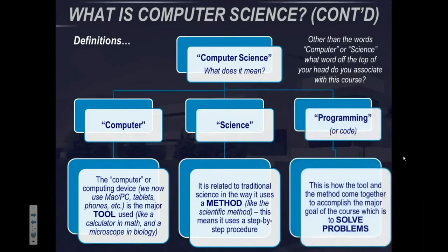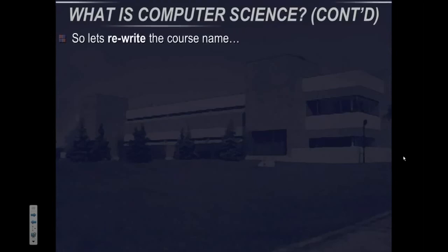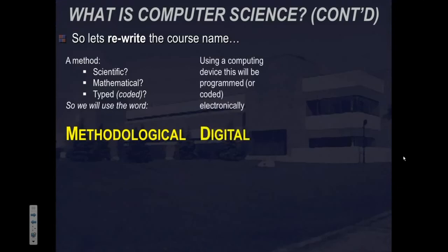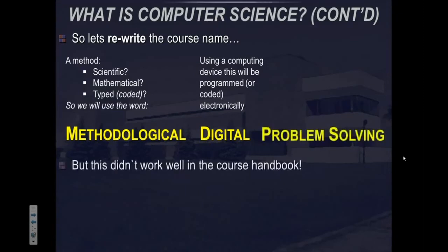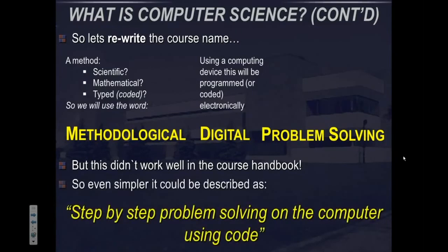But what most students associate with computer science is the idea of programming or coding. This is how the tool and the method come together to accomplish the major goal, which in computer science is to solve problems. So let's rewrite the course name: methodological — scientific, mathematical, typed or coded — digital, which implies a computer and more than a computer, and that this device will be programmed or coded electronically — problem solving. Although 'methodological digital problem solving' is more accurate, maybe we could simply describe computer science as step-by-step problem solving on the computer using code.